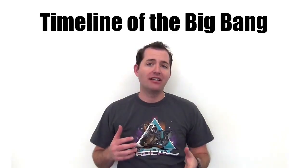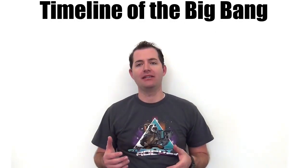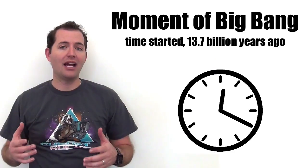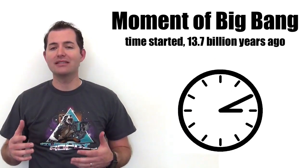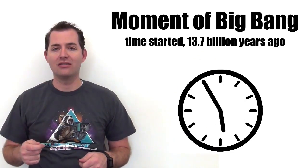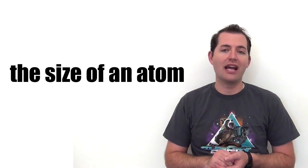Let's look at the timeline of the major events that happened following the Big Bang. At the moment of the Big Bang, time started, and this was 13.7 billion years ago. At this time, all of the mass and all the energy of the universe as we have it today was in the size of an atom.